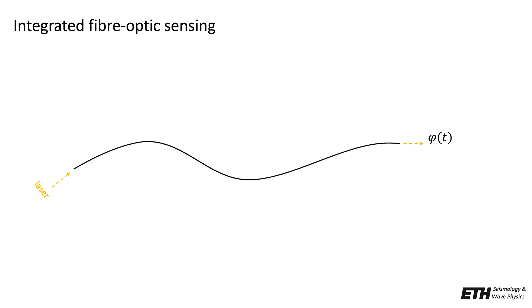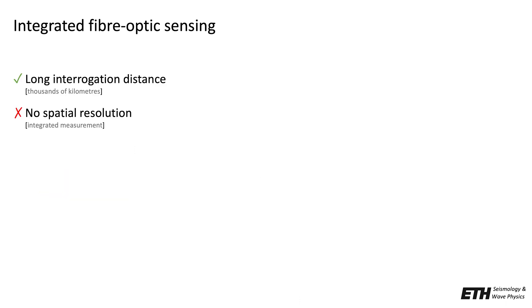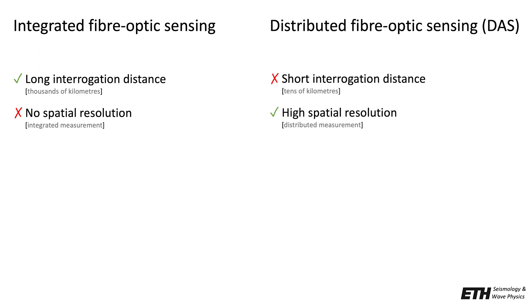An emerging technology that recently caught our attention is integrated fiber optic sensing, which is in contrast to the much more widely used distributed fiber optic sensing, also known as DAS. The basic principle of such integrated systems is as follows: a laser signal is injected on one side of the fiber and is received after some time on the other side. The deformation of the fiber changes the time it takes for the signal to travel from one end to the other, and therefore the signal arrives with a phase change delta phi. The outstanding advantage of such integrated systems is their long interrogation distance of thousands of kilometers. The price to pay is an apparent lack of spatial resolution because the measured phase change is integrated along the fiber. These properties are orthogonal to the properties of distributed fiber optic sensing, which suffers from rather short interrogation distances but offers high spatial resolution.